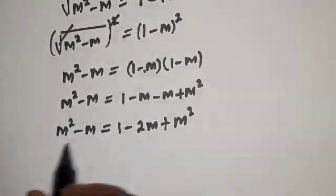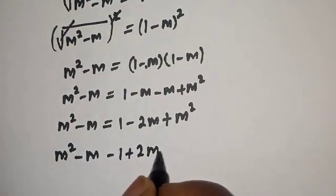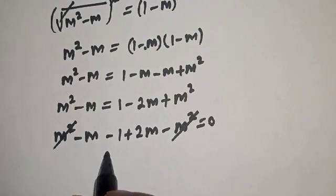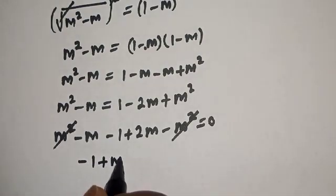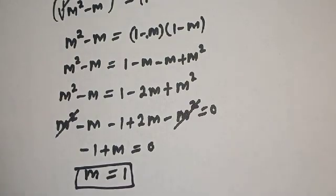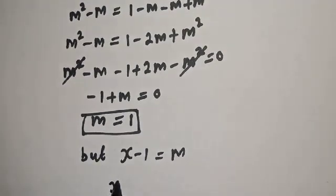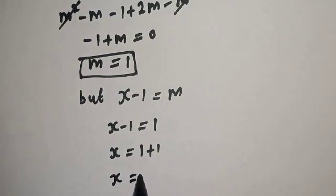Comparing both sides, the m squared terms cancel. We get m minus m plus 2m minus 1 equals 0, so m equals 1. Since we set x minus 1 equal to m, and m equals 1, we have x minus 1 equals 1, therefore x equals 2. This is the final answer.